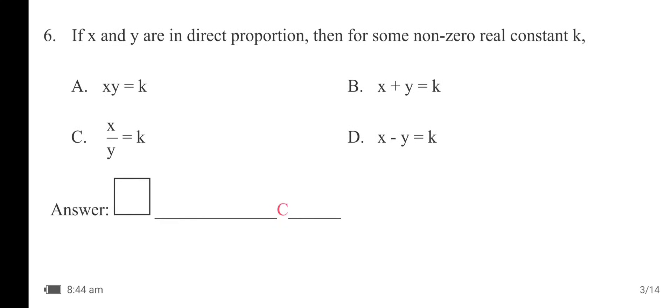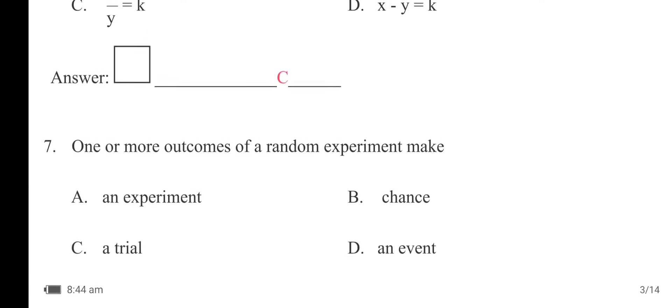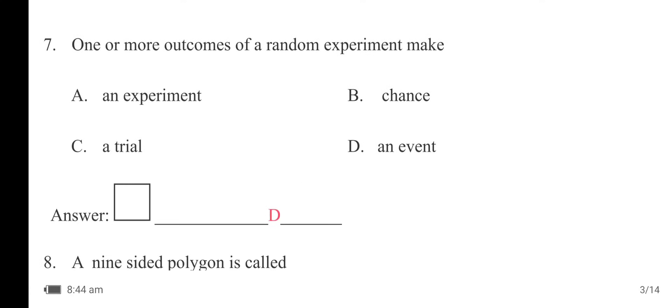If x and y are in direct proportion, then for some non-zero real constant k, the answer is option C: x/y = k. One or more outcomes of a random experiment make an event, so option D is the right answer.